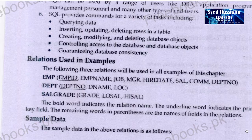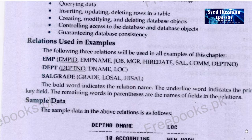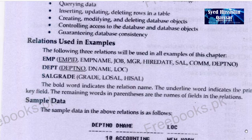The following three relations will be used throughout this chapter: Employee, Department, and Sale Grade. The Employee relation includes fields: employee ID, employee name, job, manager, hire date, salary, commission, and department number. The Department relation includes department number, department name, and location. The Sale Grade relation includes grade, low sale, and high sale. The underlined word indicates a primary key field.